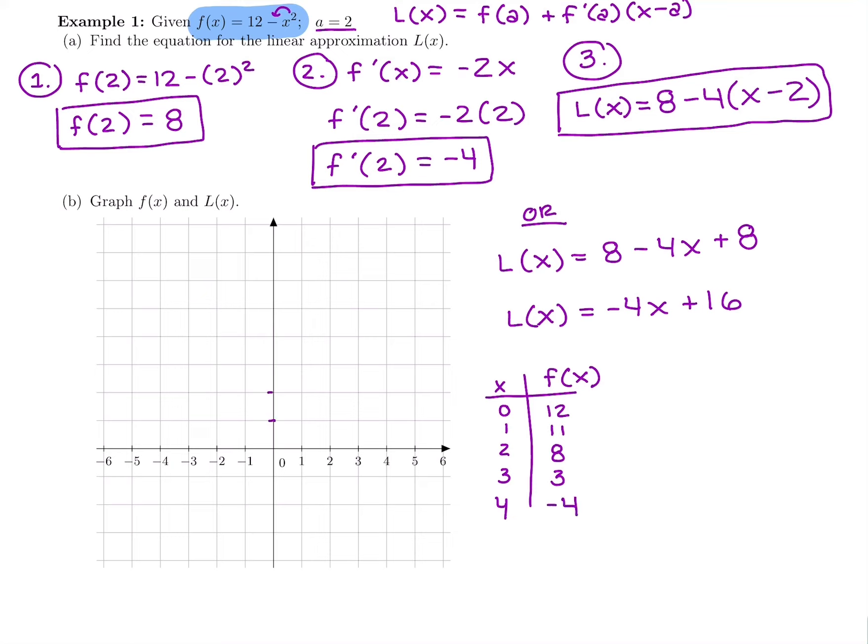So I want to make my y values so that I have up to 12. So I might just label by 2's. So 2, 4, 6, 8, 10, 12, 14, 16. So looking at this, we can also go down to negative 4, negative 2, negative 4.